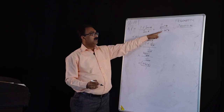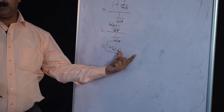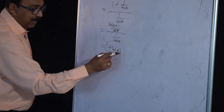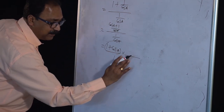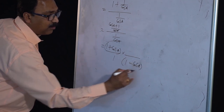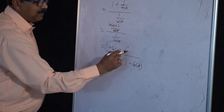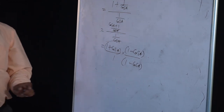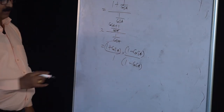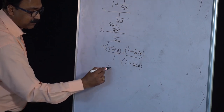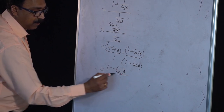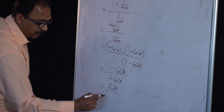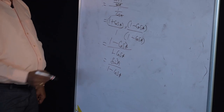To reach sin square A by (1 minus cos A) on the right hand side, we need denominator 1 minus cos A. So multiply numerator and denominator by (1 minus cos A). The denominator becomes (1 plus cos A)(1 minus cos A) — using a squared minus b squared — giving 1 minus cos square A. And 1 minus cos square A equals sin square A by the identity. So the result is sin square A by (1 minus cos A), which equals the right hand side.